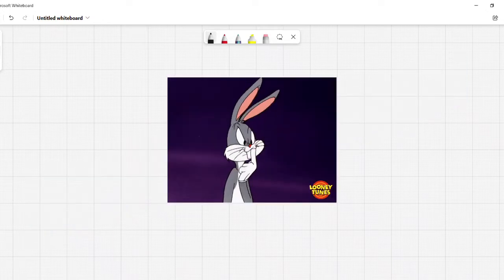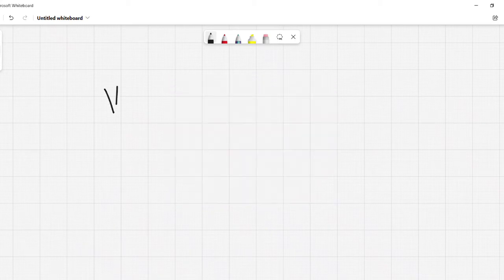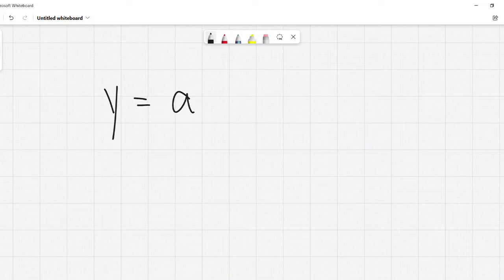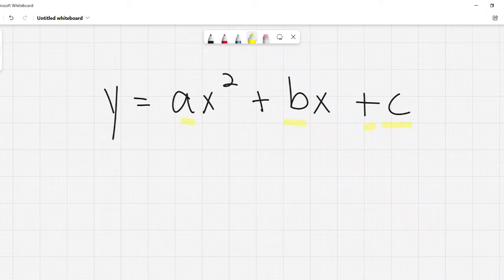So first things first, what is standard form? Standard form is when it looks something like this. Where our a, b, and c are just constants, a.k.a. numbers. They're just numbers.